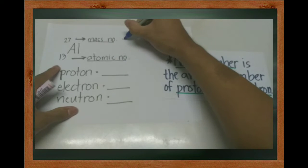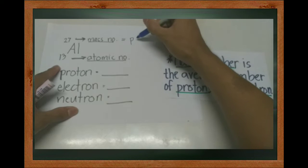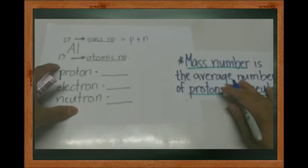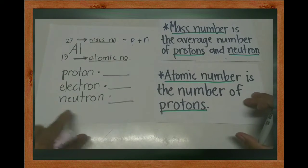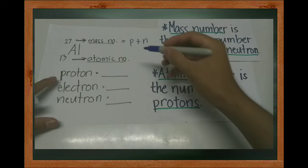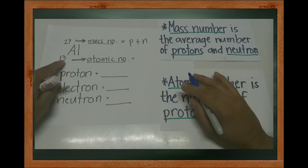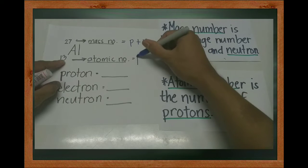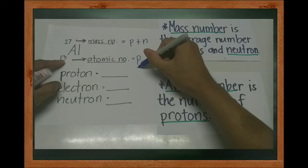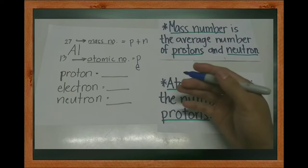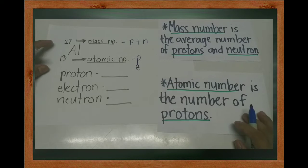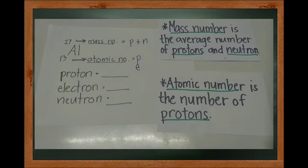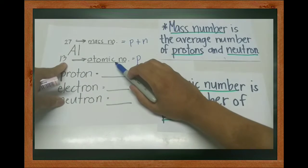So, mass number equals proton plus neutron. The atomic number is the number of protons. Here, the atomic number is 13, which means the proton number is 13. In finding proton and electron in an atom, they are always the same. So based on this example, the proton is 13, and therefore the electron is also 13.